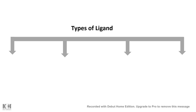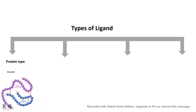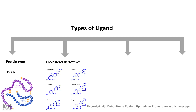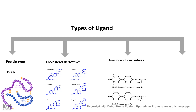Just the way we use different kinds of multimedia, cells can also use different signals or different ligands which have different chemical natures. For example, a cell can use protein-type signaling molecules like insulin, cholesterol derivatives like steroid hormones, amino acid derivatives like thyroid hormones, and one unusual one — a gaseous molecule: nitric oxide.